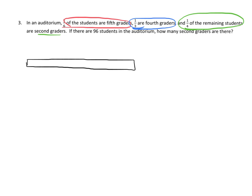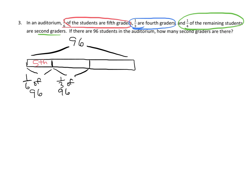One-sixth of the students are fifth graders, so I'll mark off one-sixth of 96 and label it 'fifth.' Then one-third are fourth graders — I'll mark one-third of 96 and label that 'fourth.' Finally, one-fourth of the remaining students are second graders, so we take the last piece, chop it into four units, and label one of those units 'second.'